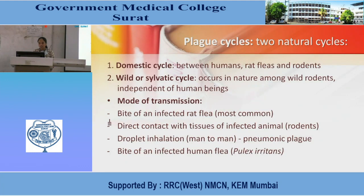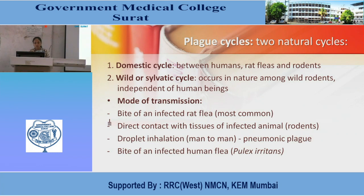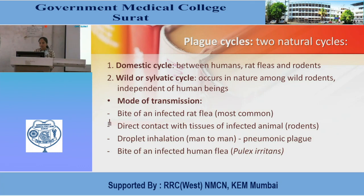Plague cycle has two natural cycles: the domestic cycle and the wild or sylvatic cycle. The domestic cycle occurs among humans, rat fleas, and rodents. The wild or sylvatic cycle occurs in nature among wild rodents independent of humans. Mode of transmission is most commonly by the bite of an infected rat flea, direct contact with tissues of infected animals or rodents, and pneumonic plague occurs by droplet infection. Pulex irritans is the bite of an infected human flea.